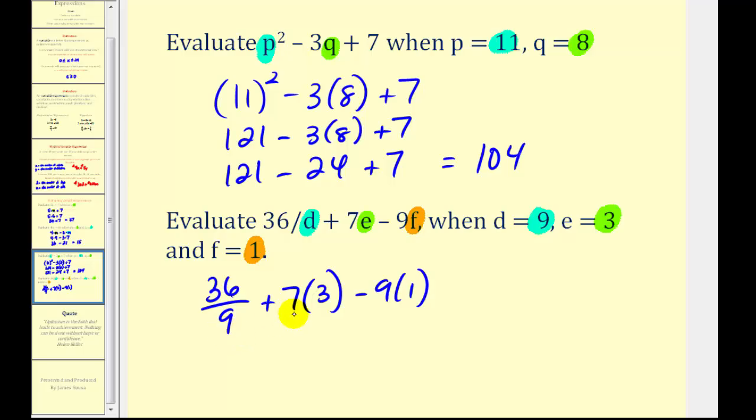So now we'll multiply and divide from left to right. So 36 divided by 9 is equal to 4, plus 7 times 3 is 21, minus 9 times 1 is 9.